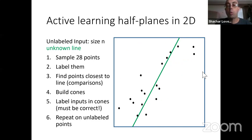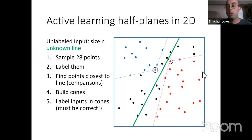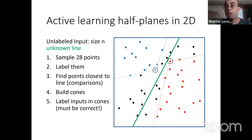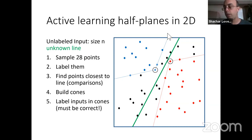The theorem says that in any iteration with some constant probability, we'll learn the labels of at least half of the unlabeled points. Each iteration makes only a constant number of queries — we only sample 28 points. So overall you need O(log n) queries. The key is we want to argue that in each iteration, one of the cones contains a large number of points so we make a lot of progress.